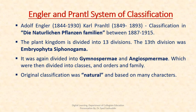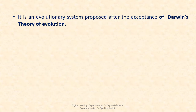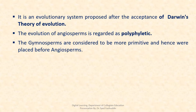The original classification was natural and based on many characters. By 1915, their system had a phylogenetic flavor, with simple plants listed first and progressing to more complex plants. It is an evolutionary system proposed after the acceptance of Darwin's theory of evolution. The evolution of Angiospermae is considered as polyphyletic. The Gymnospermae are considered to be more primitive and hence were placed before Angiosperms.